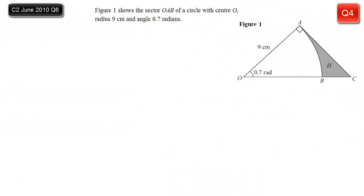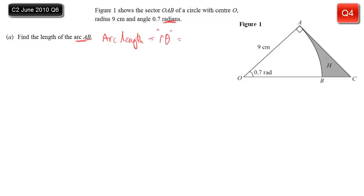We've got a diagram showing sector OAB of a circle, with radius 9cm and the angle given as 0.7 radians. The first thing we're asked for is the length of arc AB. This is straightforward - we have the formula for arc length: Rθ. This applies as long as the angle is in radians, which it is. So easy marks here: multiply the radius of 9 by the angle of 0.7, and we get 6.3cm exactly.